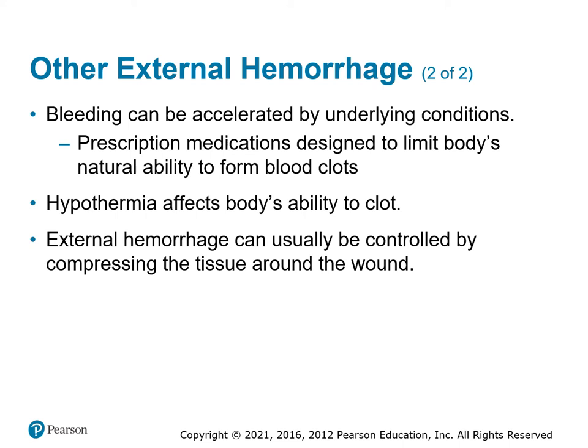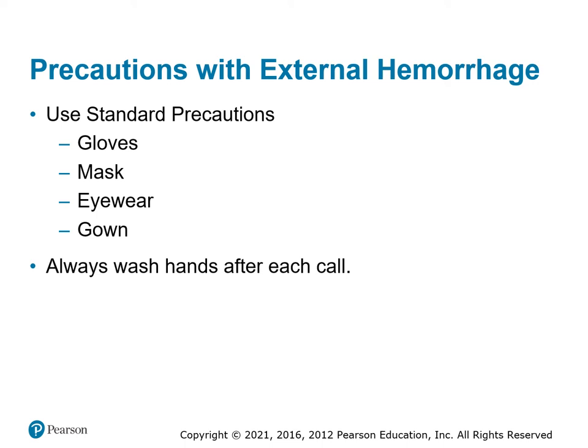Things that make bleeding worse include drugs that inhibit blood clotting — patients on anticoagulant therapy for history of stroke, MI, atrial fibrillation, or pulmonary embolism may not be able to clot when they need to. Hypothermia reduces clotting factors, so keep patients warm to maintain clotting ability. Blood carries blood-borne pathogens, so always use standard precautions — gloves, mask, eyewear, and gown if possible. In critical trauma you may not get a gown on, but always wash your hands with hot soapy water after the call.